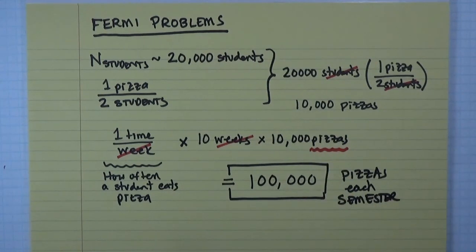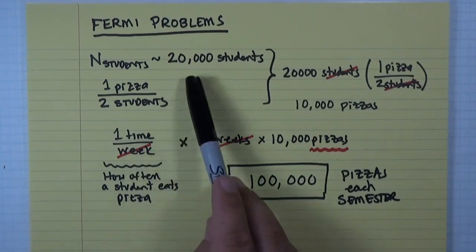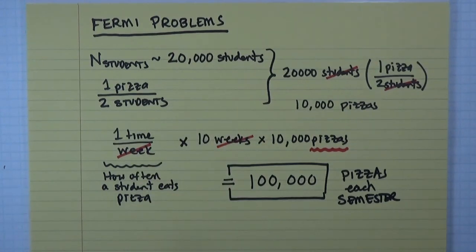You may have done this same calculation by making a few different assumptions. Maybe you might have changed how often students eat pizza. Maybe you would have had your semester be a little bit longer. Maybe you would have had a slightly different number for the total number of students on campus. Whatever. But by and large I would guess that the number you come out with at the end is very close to that number that I just estimated.